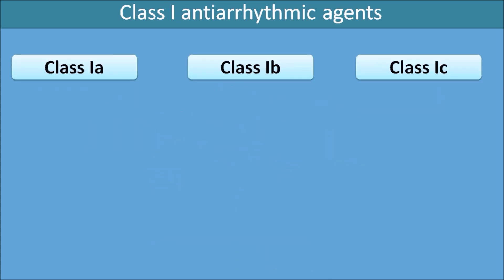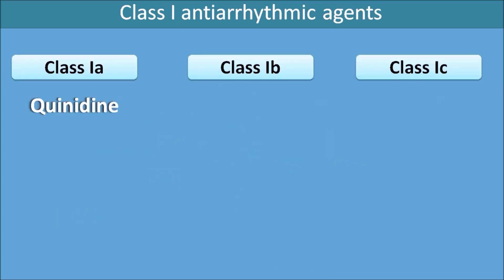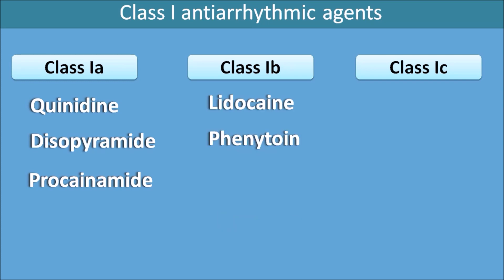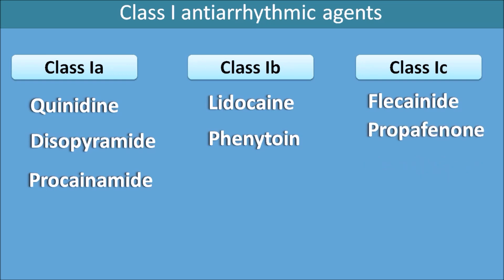The Class 1a drugs are quinidine, disopyramide, and procainamide. The Class 1b drugs are lidocaine and phenytoin. The Class 1c drugs are flecainide and propafenone. In this way Class 1a, 1b, and 1c drugs can be classified.